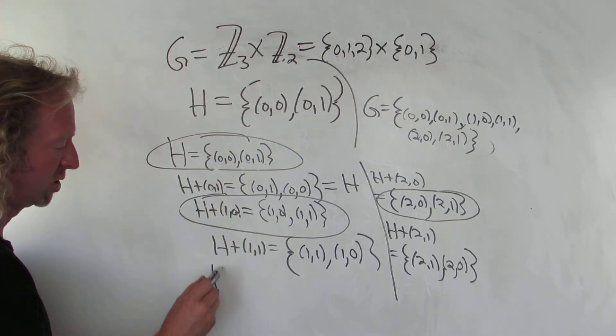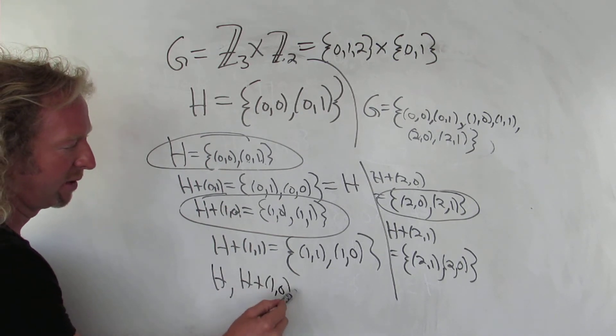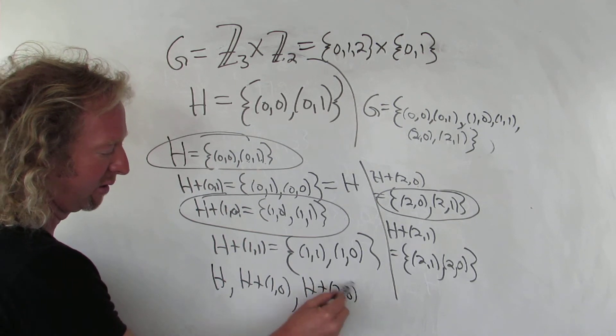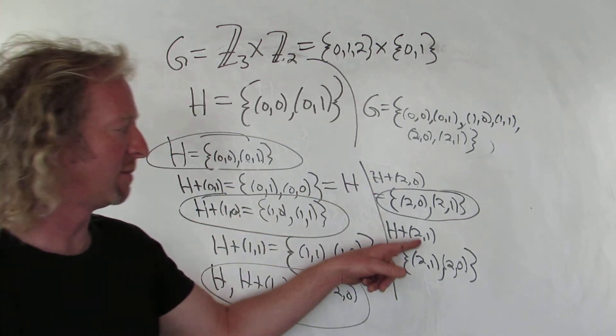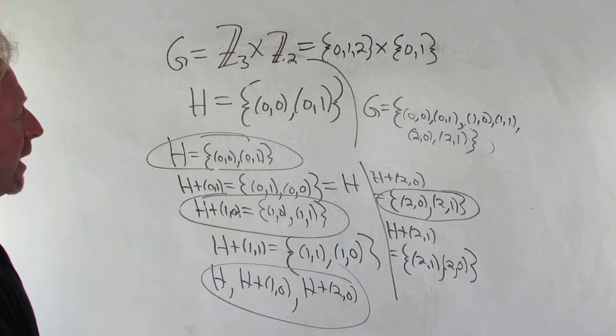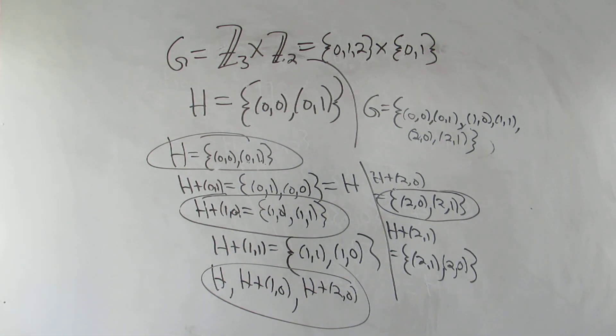Looks like we have H. We have H plus (1,0). And then we have H plus (2,0). We could have written, you know, these are the same as many others. For example, these are the same. So you could write this down instead of this. But it looks like we have 3 cosets. So that's it. Thank you.